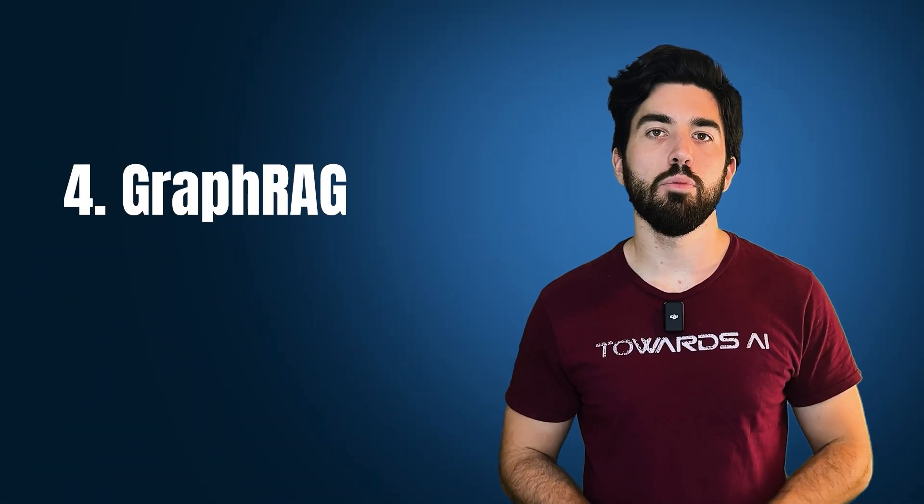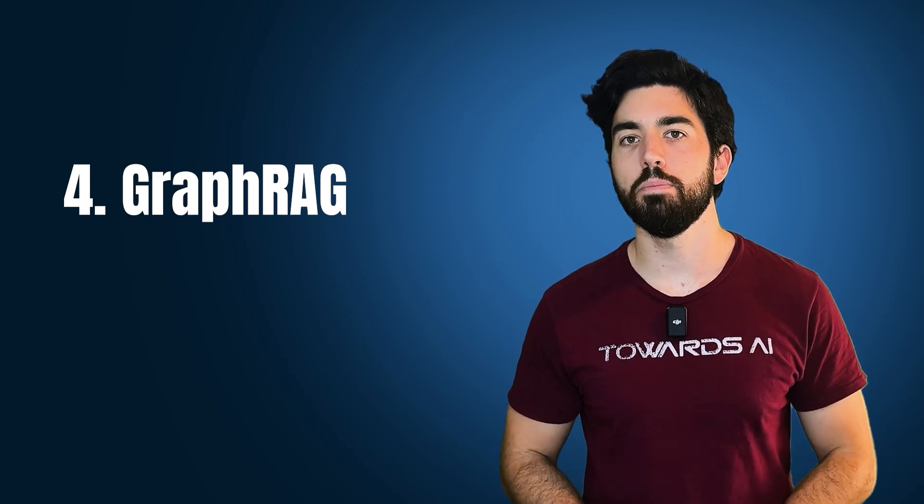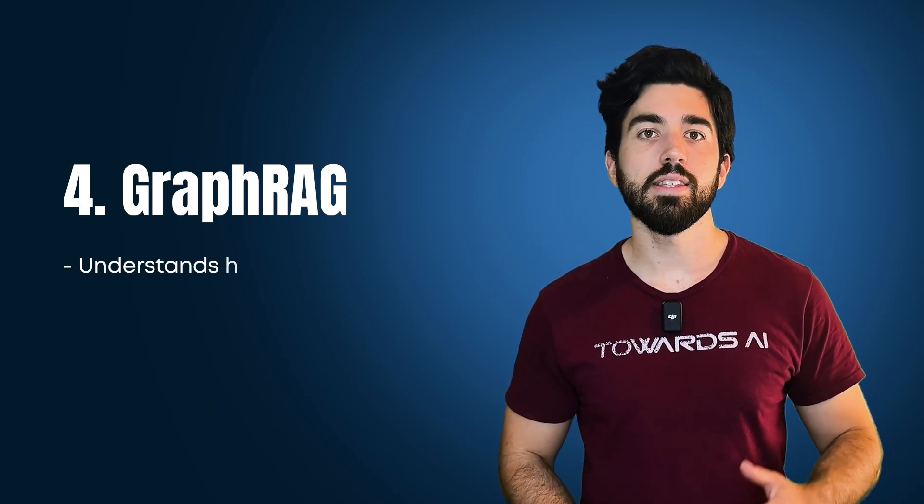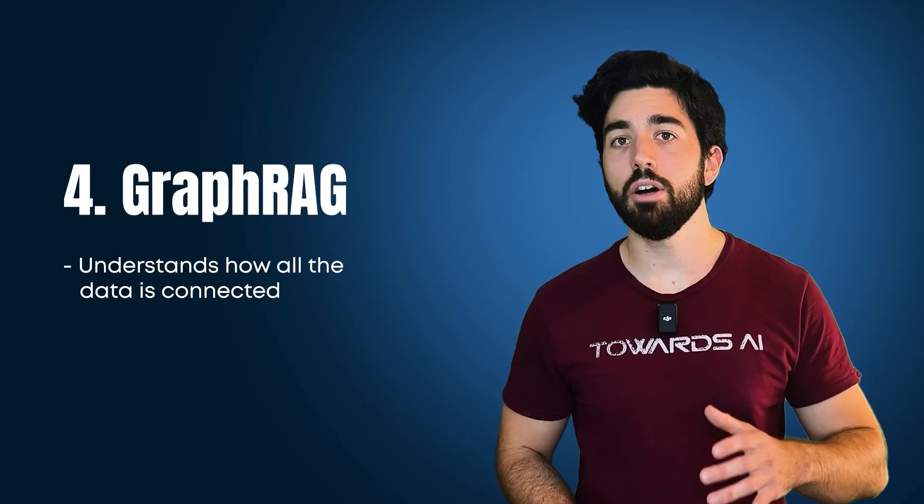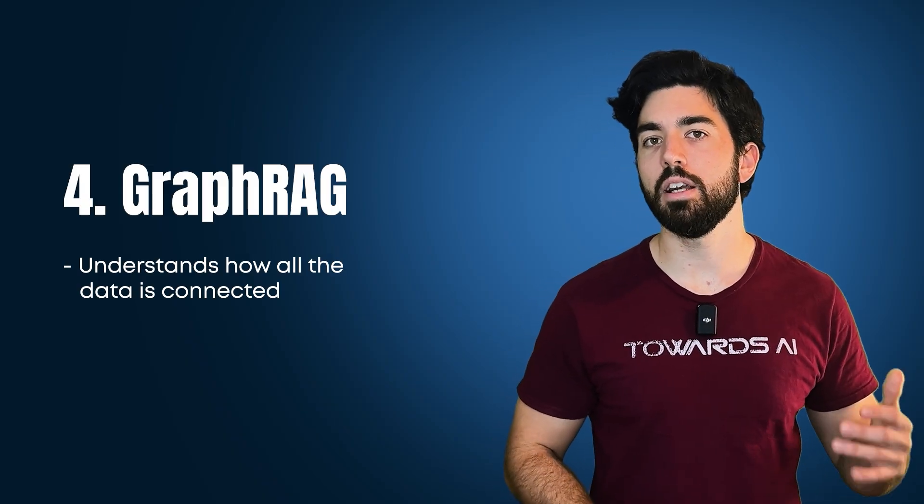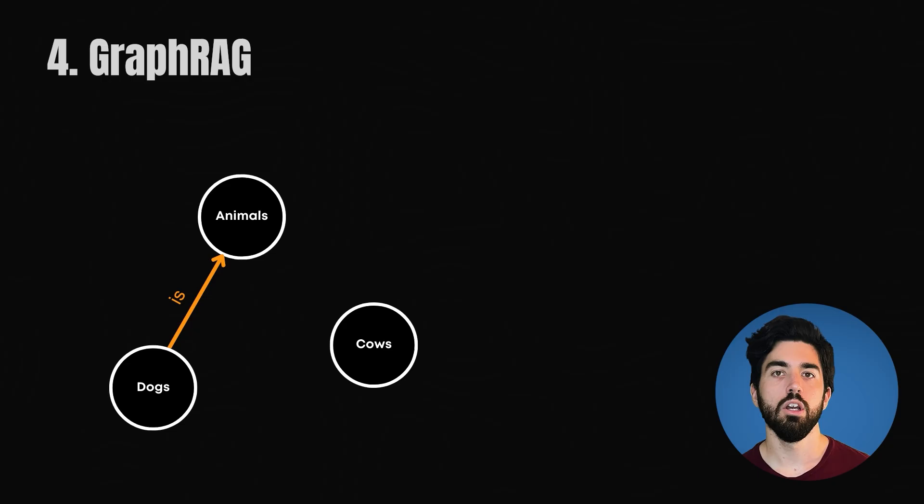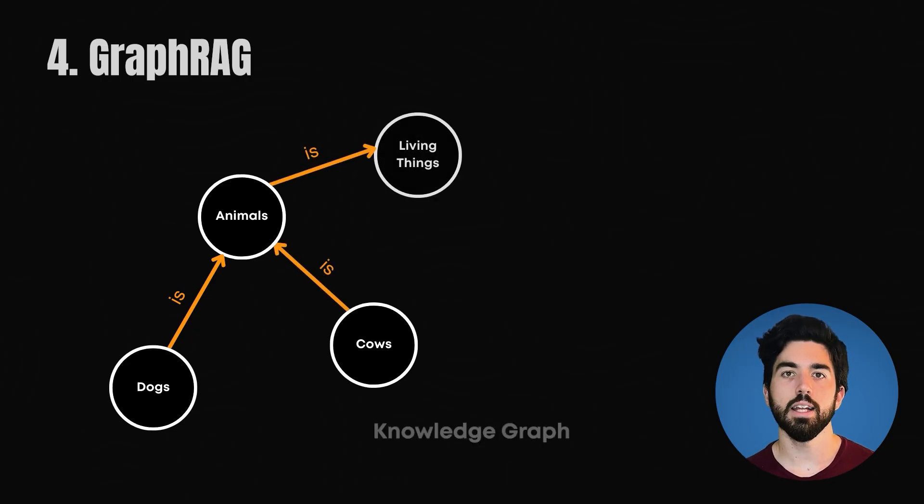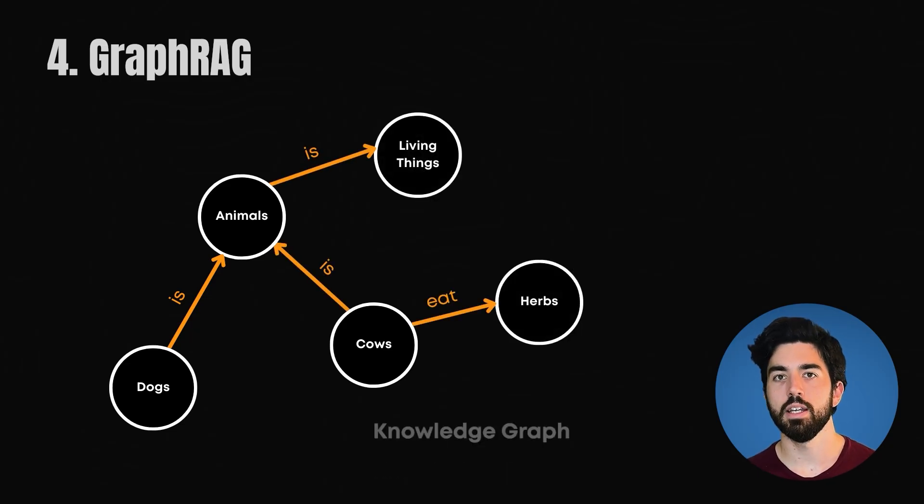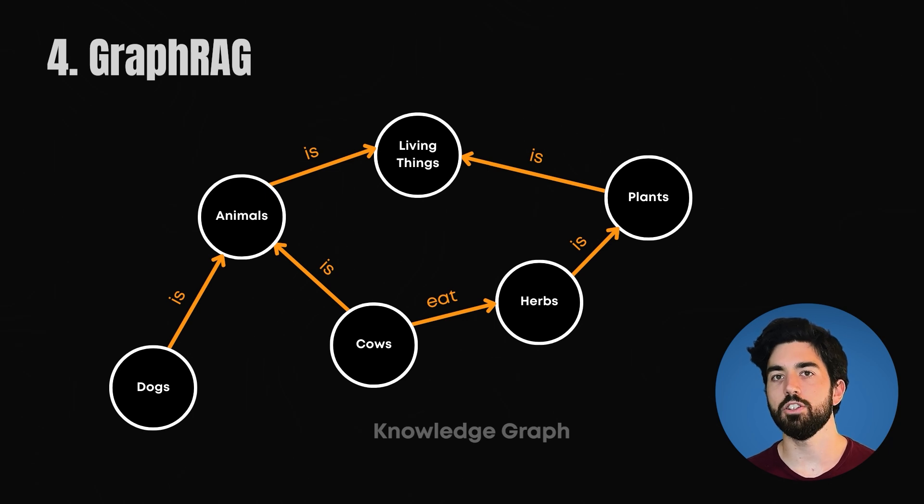Now, let's level up with GraphRAG, a new method popularized by Microsoft. This isn't just about finding information, it's about understanding how it's all connected. GraphRAG uses relations between objects or people, which we call knowledge graphs. Instead of just finding relevant documents, it discerns their relationships and extracts entities and relationships, creating a structured representation that captures semantic connections from the data.